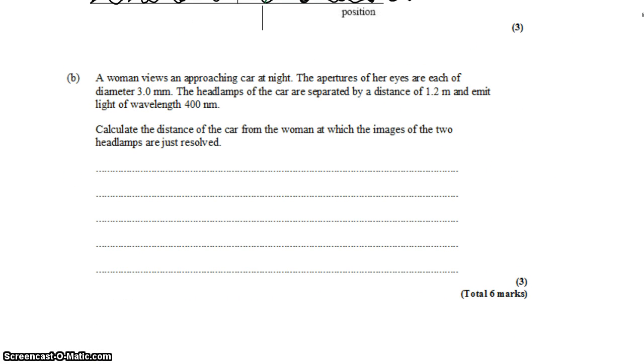In part B, it says a woman views an approaching car at night. The aperture of her eyes are 3 millimeters, and the headlamps of the car are separated by 1.2 meters. They emit light of wavelength 400 nanometers. We want to calculate the distance from the car at which the woman can just resolve the headlamps. So when the car is very far away, she's not able to tell that there are actually two headlamps there. The light merges in such a way that it looks like just one headlamp. And we want to find how far away is the car when she can just tell that there are two.